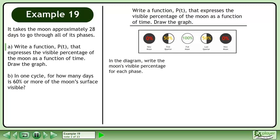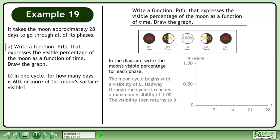In the diagram, write the moon's visible percentage for each phase. The moon cycle begins with a visibility of 0. Halfway through the cycle it reaches a maximum visibility of 1. The visibility then returns to 0.